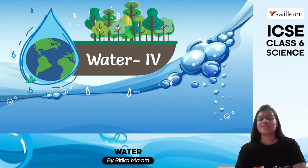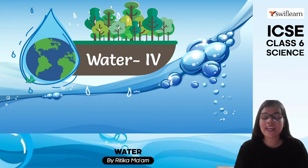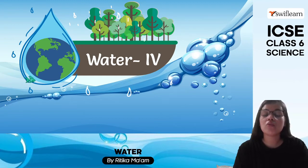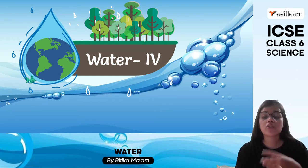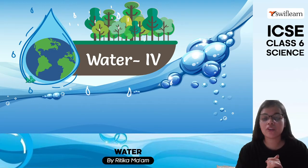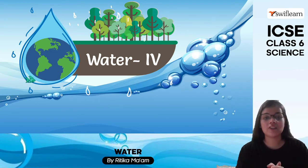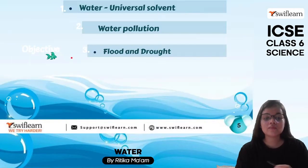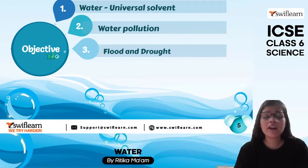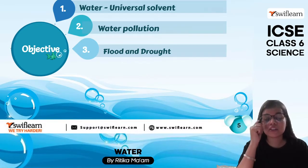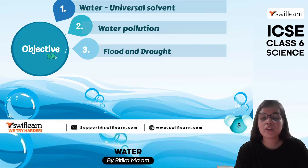We are going to take our chapter further — this is our fourth session on Water. We have already done three sessions covering many things. If you missed those videos, you can find them on the Swift Learn channel. Today we are going to cover water as a universal solvent, what is water pollution, and what are flood and drought.